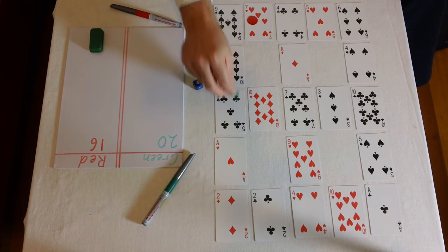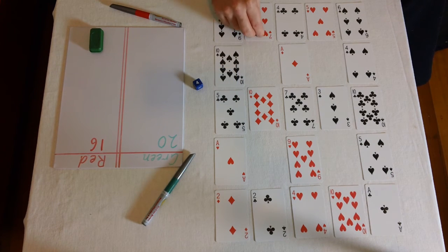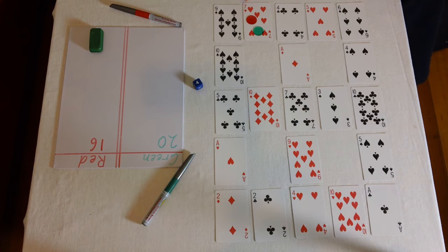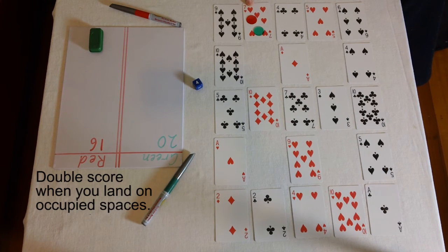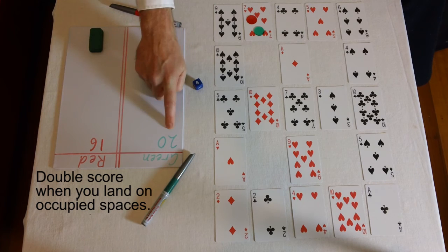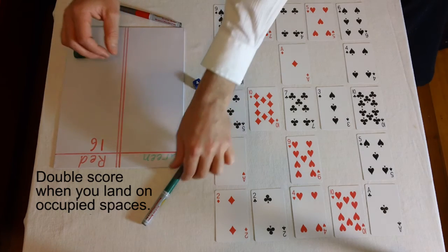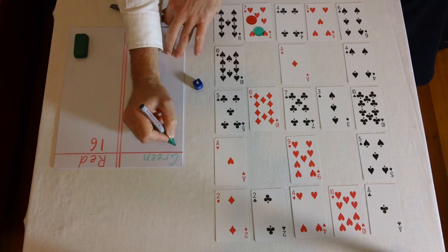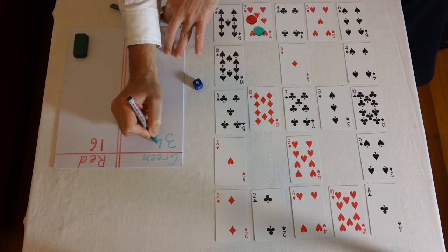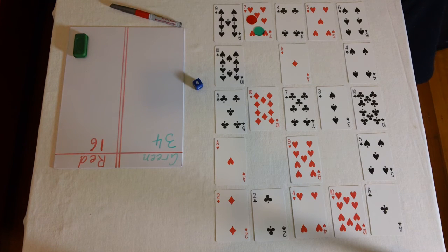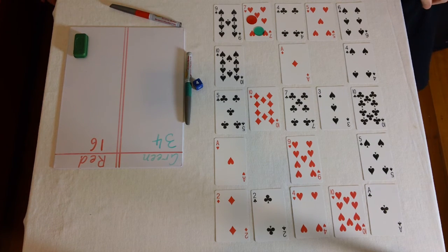I could then go one, two, three, four. And instead of adding seven to my score, I double seven, which is fourteen. And then I add fourteen to that score, which is thirty-four. So that's just something extra for a bit of fun and learning how to double numbers.